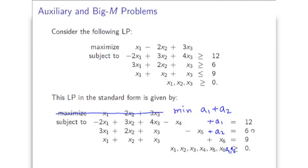There are two possibilities. The first possibility is that the minimum value for a1 plus a2 is 0, in which case both a1 and a2 must be equal to 0. Whenever both a1 and a2 are 0, this part just disappears, and the values for x's that we get in this solution will actually be a feasible solution for the original LP. We can then use this feasible solution as a starting point for solving the problem. This gives rise to what we call the two-phase simplex method, where in the first phase we solve this auxiliary problem, and in the second phase we use the solution to this auxiliary problem as the initial solution for solving the original LP.